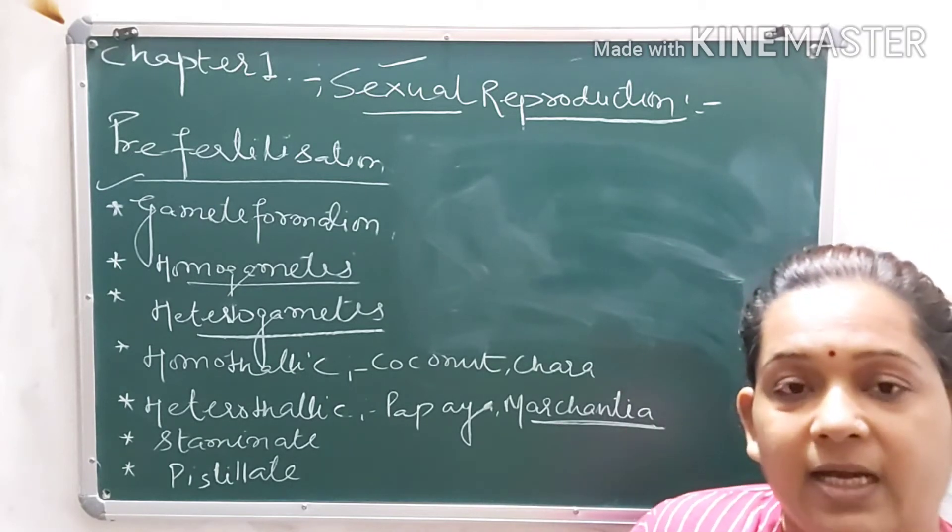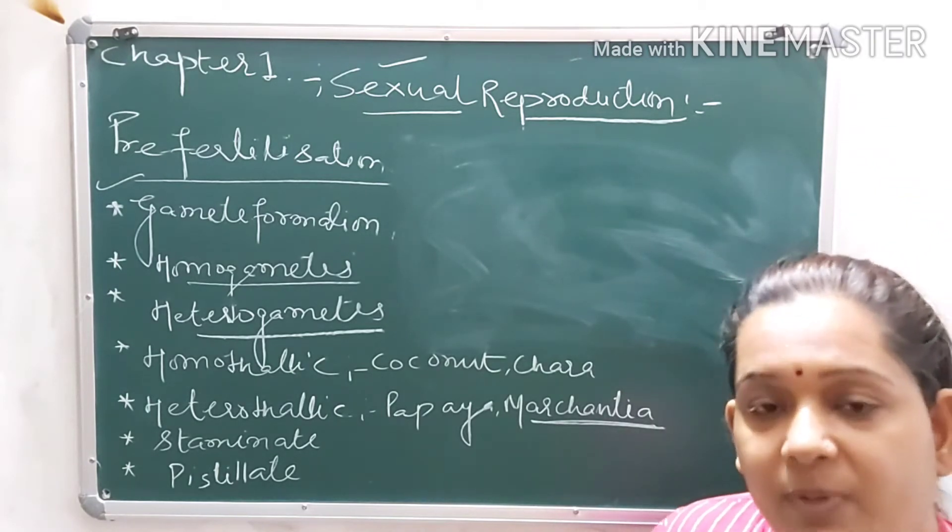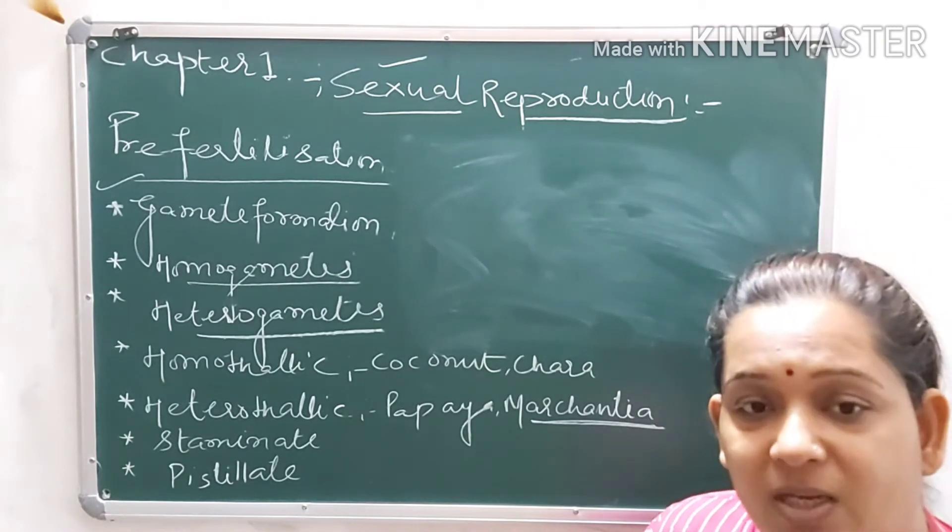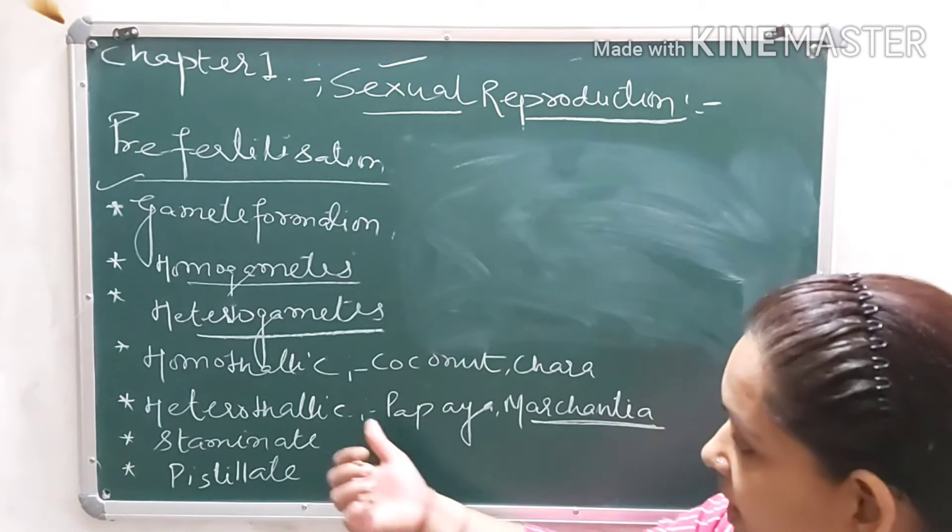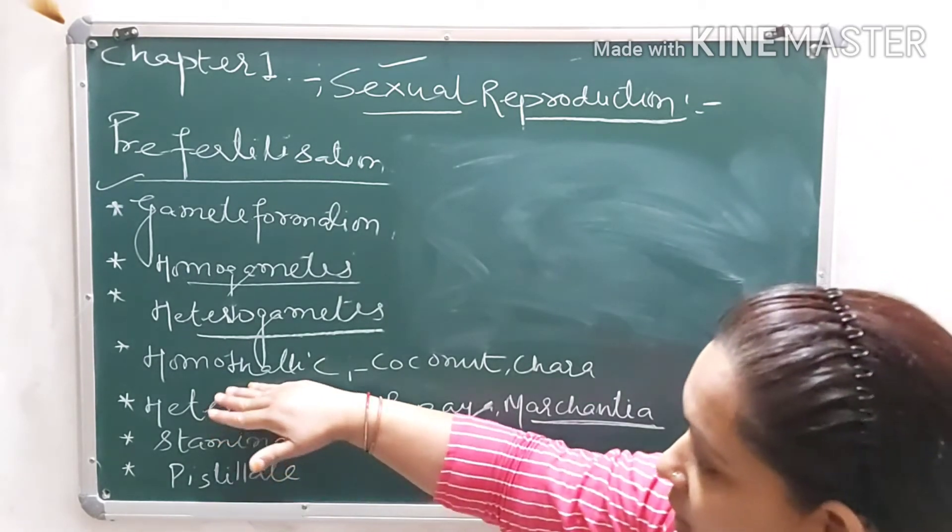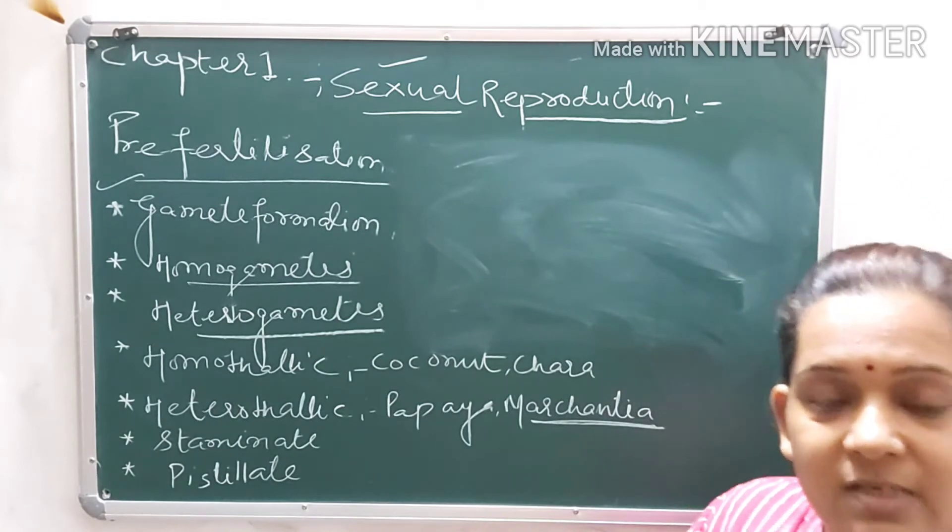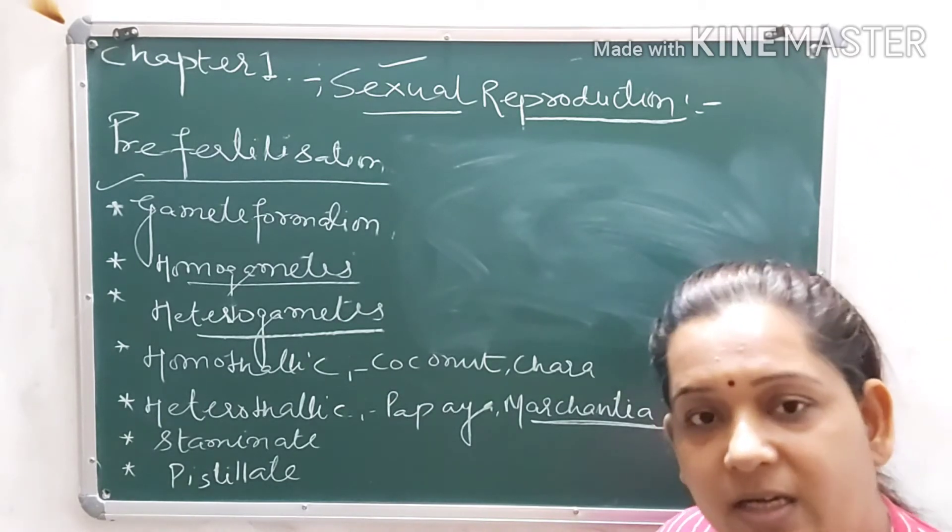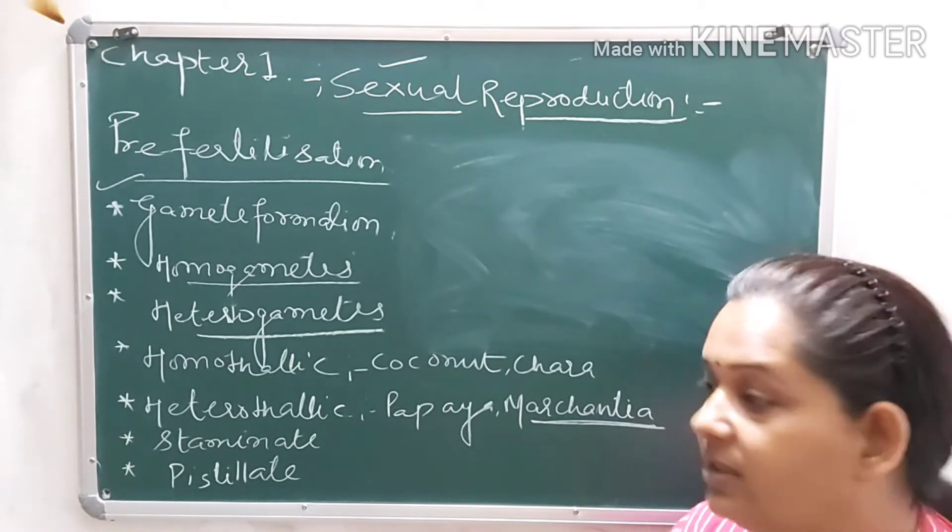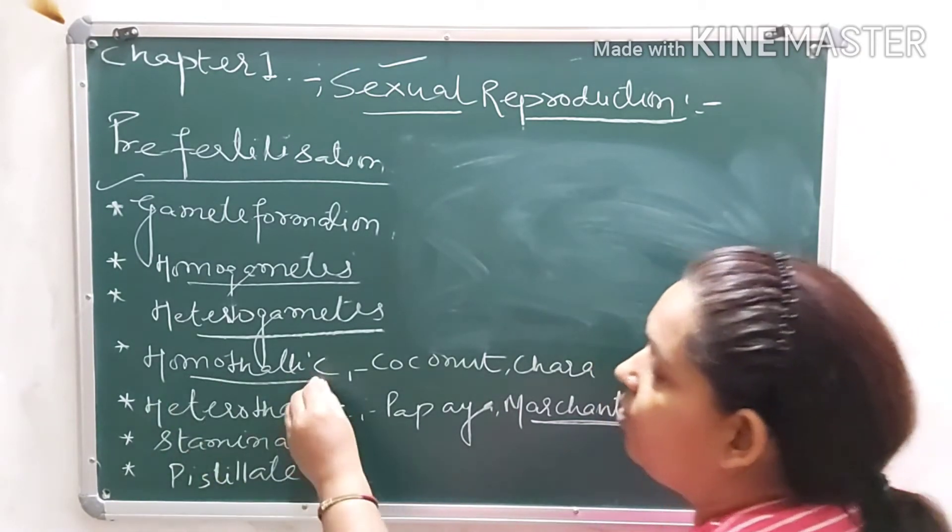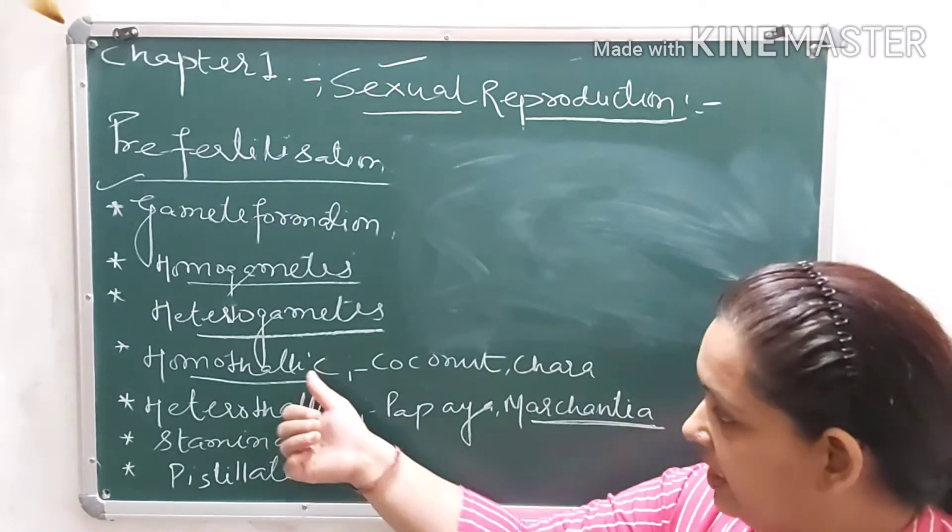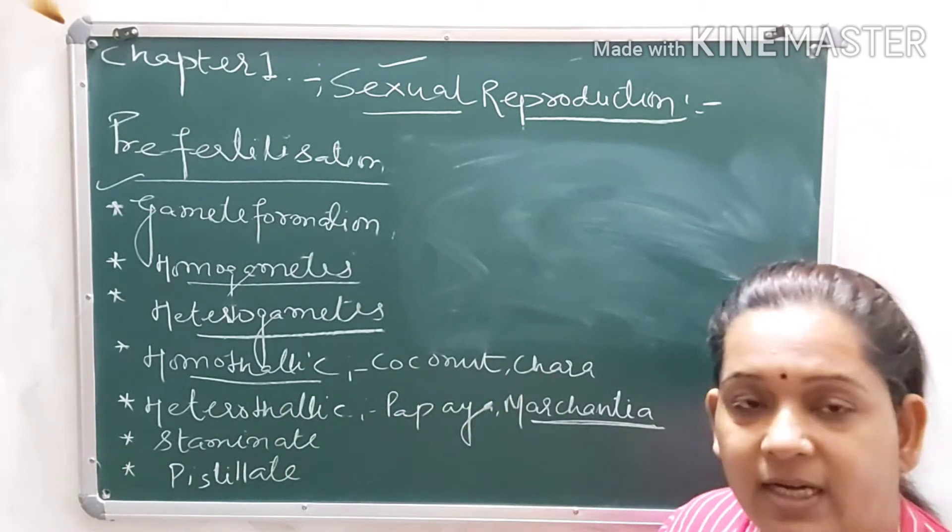Next term, when both sexes are separate on different thallus and they produce different gametes, the term we use is heterothallic. Homothallic means when a single thallus or single organism produces both male and female gametes. Example of homothallic is coconut and Chara.